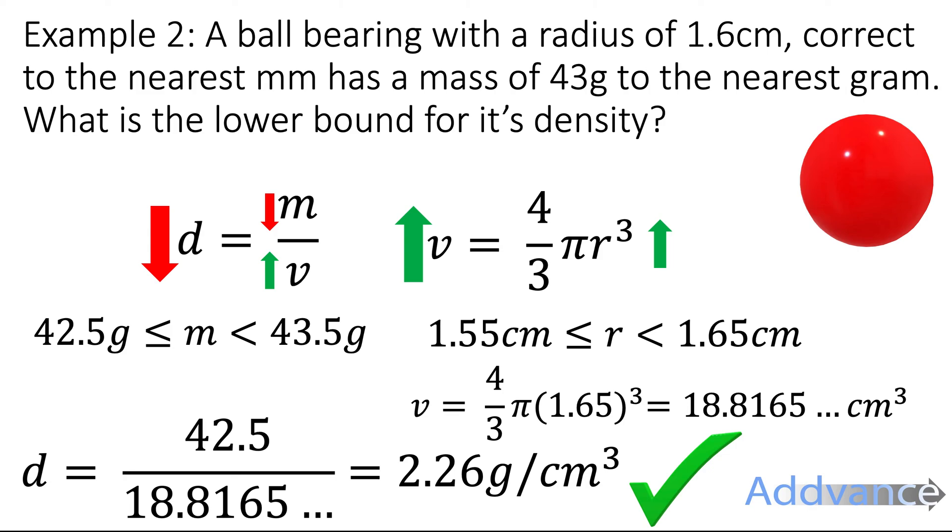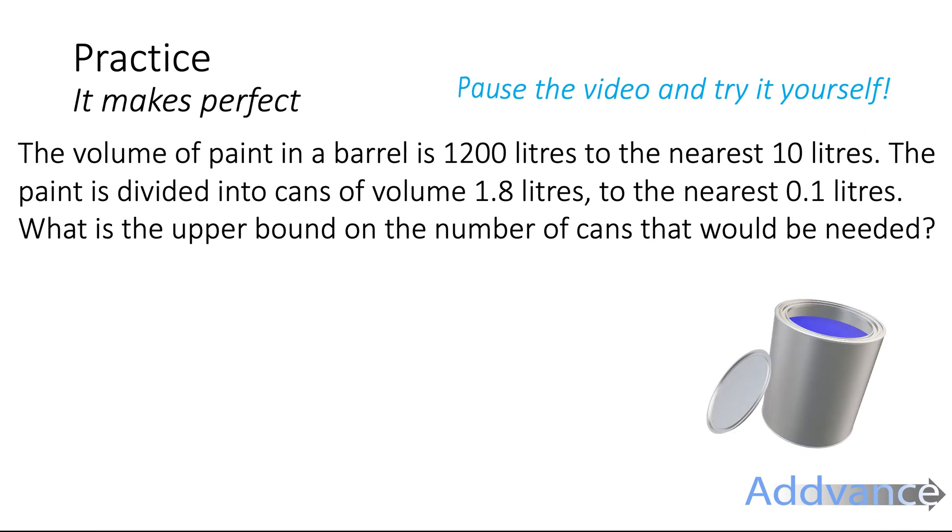Quite a lot of steps to that one. I think you should re-watch the video a few times to make sure you're happy. If you are ready, you can try this question here. It says the volume of paint in a barrel is 1,200 litres to the nearest 10 litres. The paint is divided into cans of volume 1.8 litres to the nearest 0.1 litres. What is the upper bound on the number of cans that would be needed? Pause the video now and try this yourself.